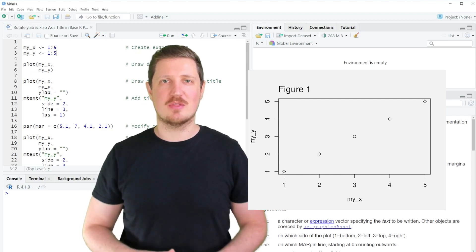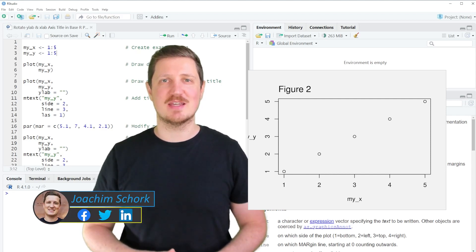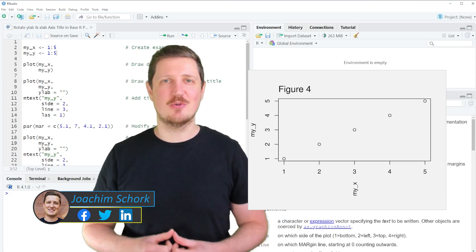This video explains how to rotate the xlab and ylab axis label titles in a base R plot. So without much talk, let's dive into the R code.